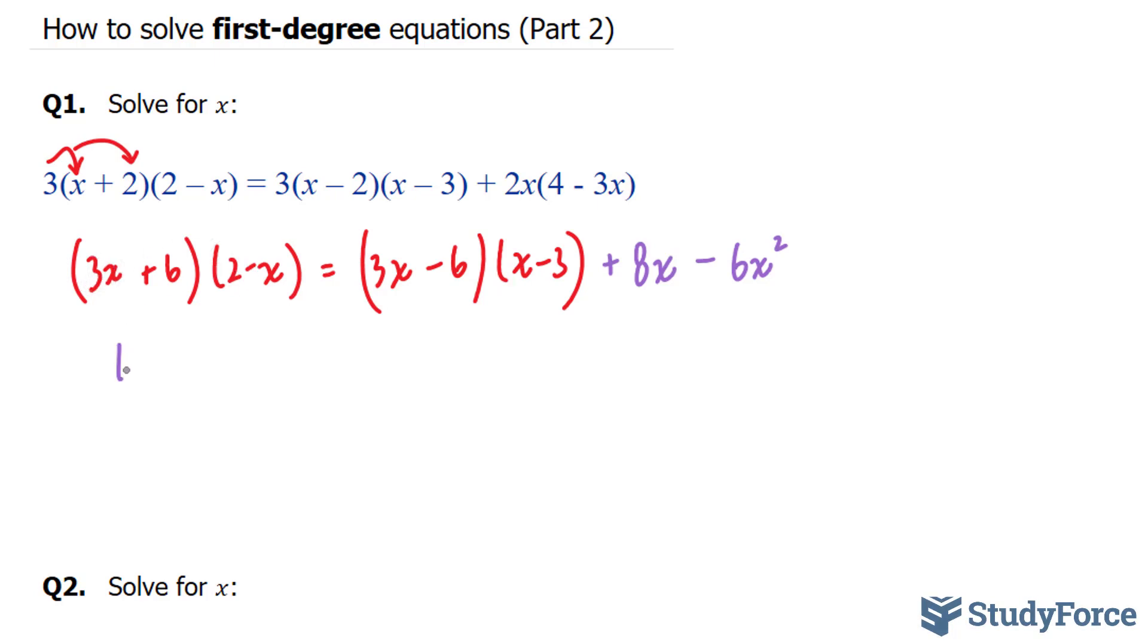Let's go ahead and do that. 3x times 2 is 6x. 3x times negative x gives us negative 3x squared. Multiply this 6 with that 2 and this 6 with that minus x, and we end up with plus 12. And that gives us minus 6x.